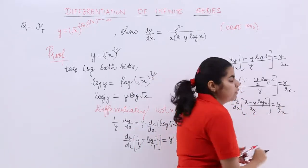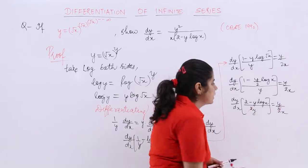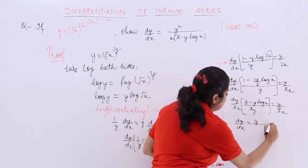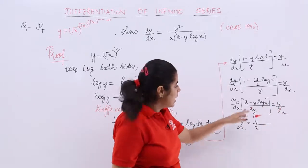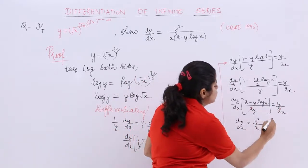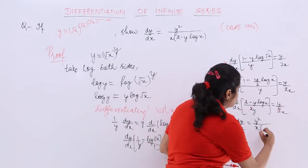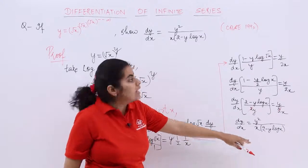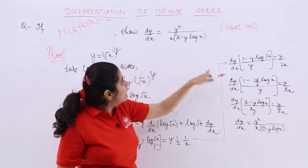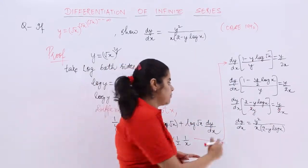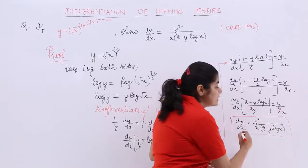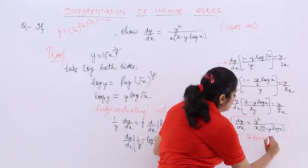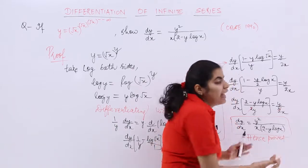Now you see, was this the answer that we needed to prove? Y square x and rest everything same. So I put it in the bracket and since it was a prove question, show that question, I write the last step as hence proved.